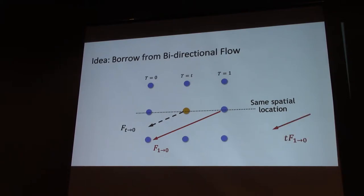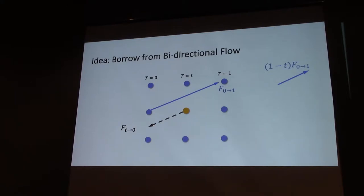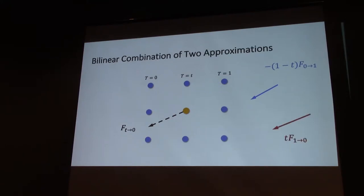We can do it in another way by taking information from the forward optical flow - again modify its magnitude, but this time we reverse its direction. So now we have approximations in two directions. Next we can fuse them in a linear way. The intuition here is the closer t is to zero, the higher weight we give to the optical flow from zero to one.